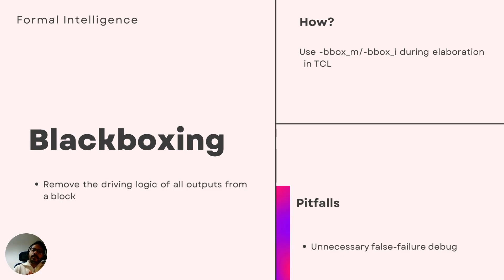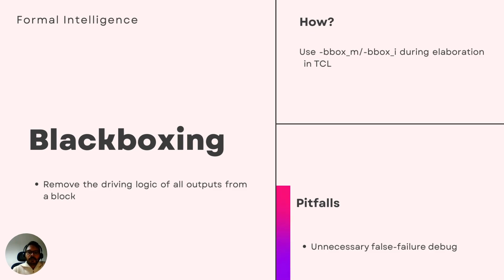Now let's say you don't care about the module data generator at all for verifying the data transporter block. Here you can do something called black boxing of the block data generator, so that all the outputs coming from the block are freely driven. Black boxing simply means removing a module or instance of a module during the formal run. Compared to cut pointing of signals, the key difference is that a black boxed module will not be elaborated, and all its outputs will be driven freely. Tools like Jasper Gold allow you to black box all instances of a module or certain instances, using commands like bbox_m or bbox_i.